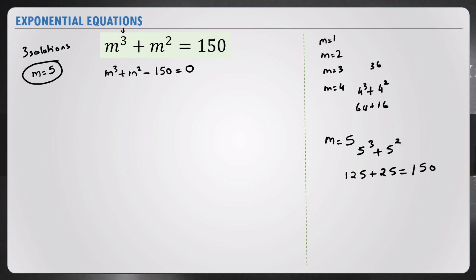We write the equation down and we know one of the solutions is m equals 5. That means m minus 5 should be part of this. That means we had m minus 5 into an equation gave me m cubed plus m squared minus 150. What is this equation? We can divide by m minus 5 and we will find this equation.